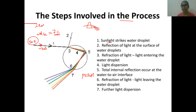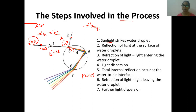Sunlight strikes the water droplet and reflection of light occurs. The first process is sunlight striking the water droplet. The second process is light going to reflect. You know the first law of reflection: angle of incidence equals angle of reflection. Some amount of light will reflect and some amount will refract. The third process is refraction of light — light entering the water droplet.